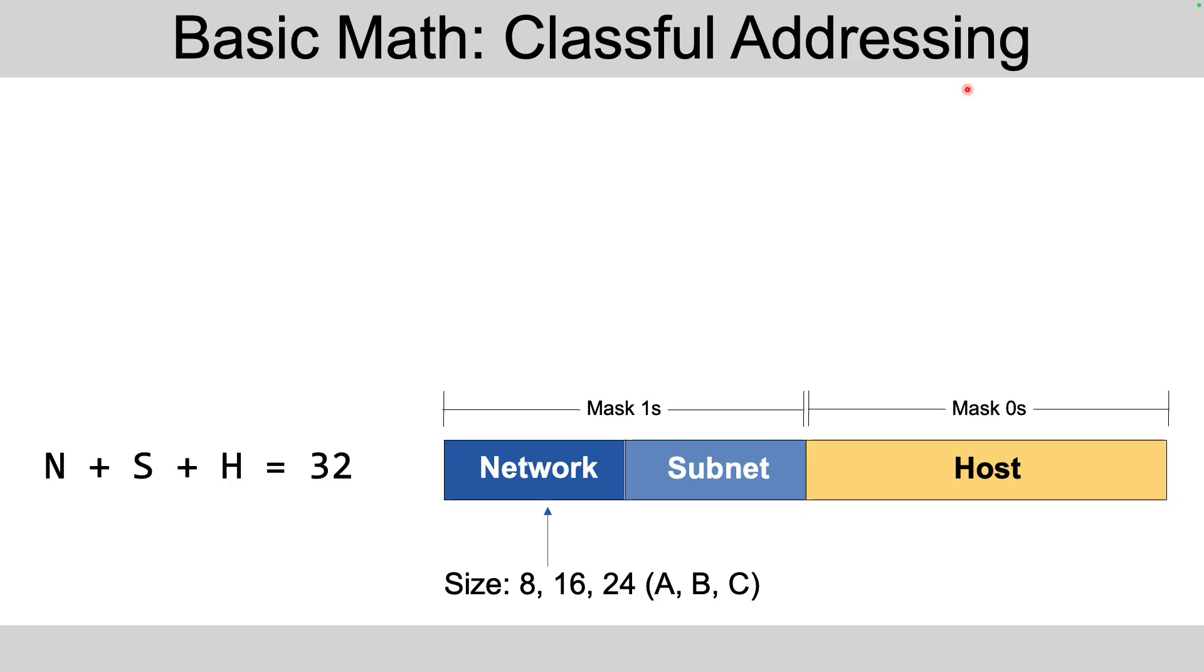So when we think with classful addressing thoughts, we think there's a part here that's the network part, and it's 8, 16, or 24 bits wide based on whether the address itself is a class A, B, or C address per class rules.